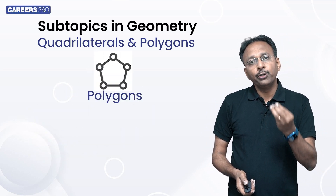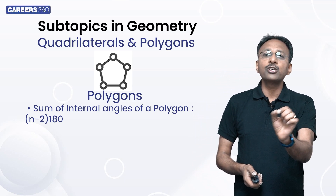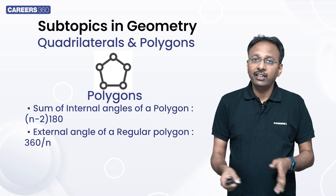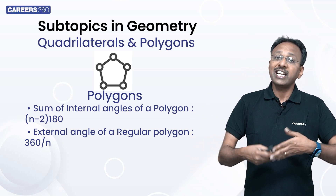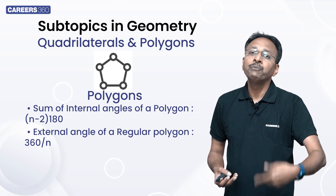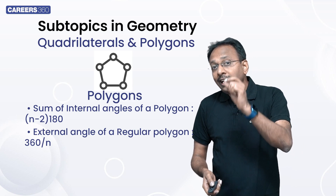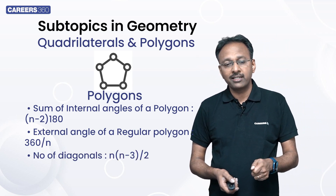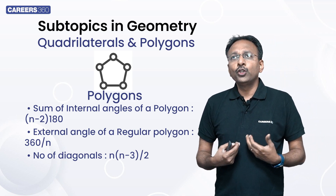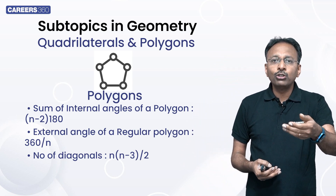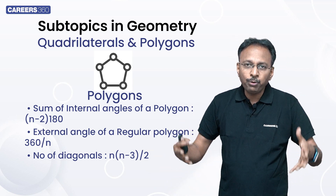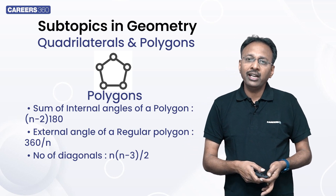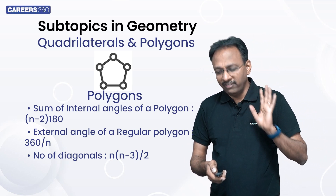When you talk about polygons, the sum of internal angles is (n − 2) × 180 degrees. The external angle of a regular polygon is 360/n, where n is the number of sides — so for a hexagon, 360/6 = 60 degrees. The number of diagonals is n(n − 3)/2, which is also nc2 minus n. Those good at permutations and combinations will find this easy. n(n − 3)/2 is the simple way to remember it.